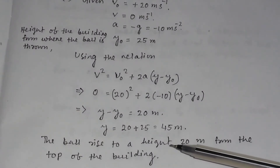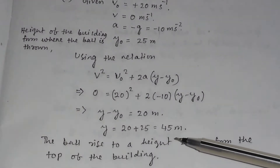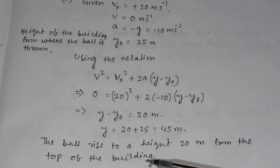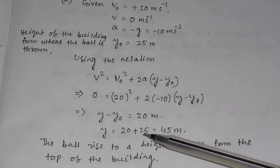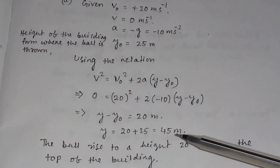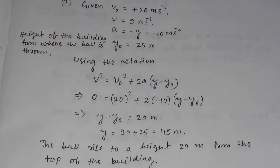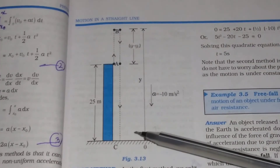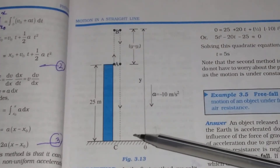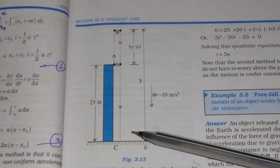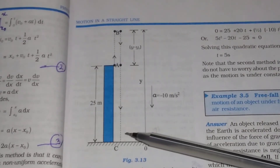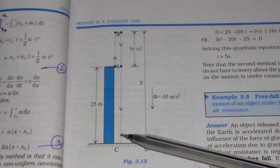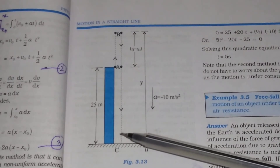The total height from the ground will be equal to 20 plus 25, which equals 45 meters. In the second question, how long will it be before the ball hits the ground? You can solve this problem by two methods.